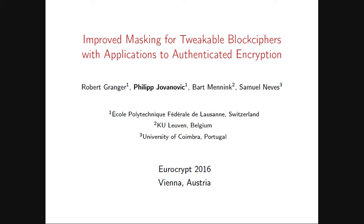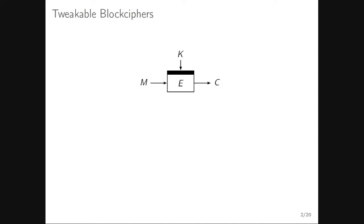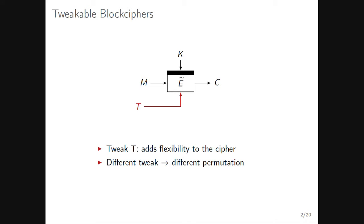Let me start with some terminology. A block cipher takes a message and a secret key as input, applies some nonlinear operations, and produces a ciphertext. A tweakable block cipher has an additional input — a tweak t, which is a public value that adds flexibility and performs internal randomization. With fixed inputs but different tweaks, you get different ciphertexts as output.